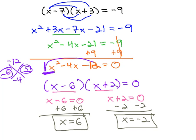Solving equations with the zero product rule is a three-step process. First, make it equal zero, then factor, then set each factor equal to 0.